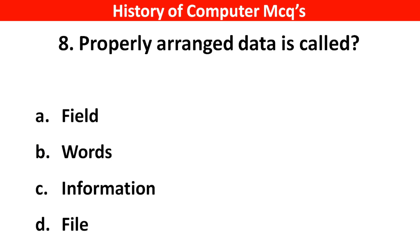Next question. Properly arranged data is called — Options A: Field, B: Words, C: Information, D: File. Right answer is option C, Information.